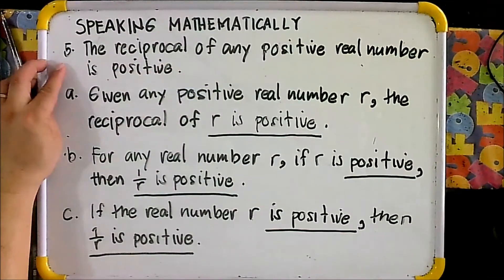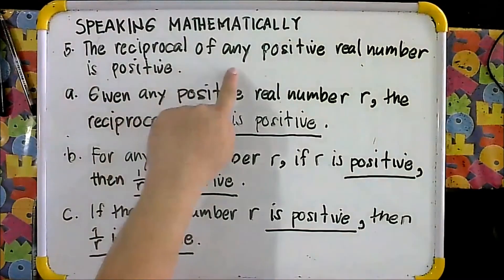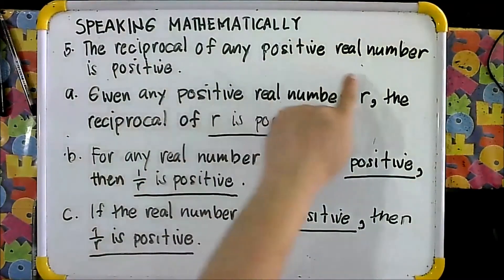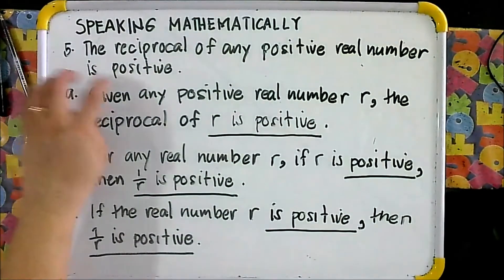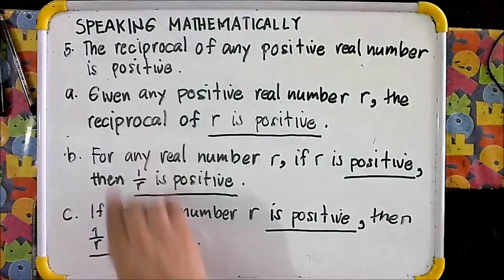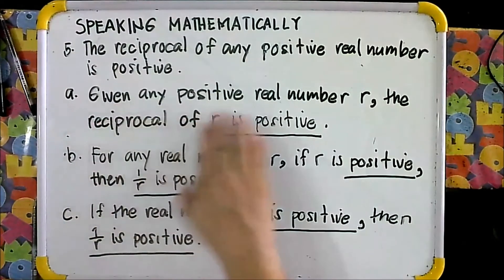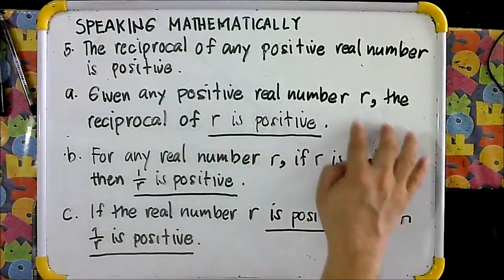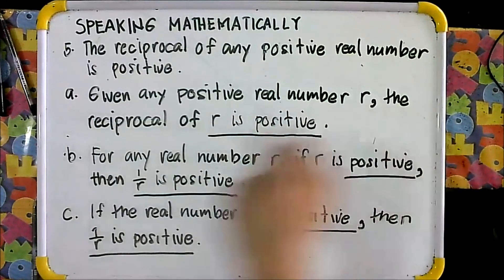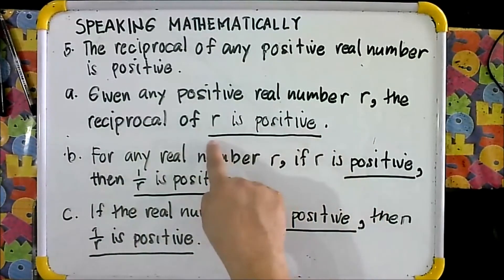For number 5: the reciprocal of any positive real number is positive. So for letter A, given any positive real number R, the reciprocal of R is positive. This is your answer.